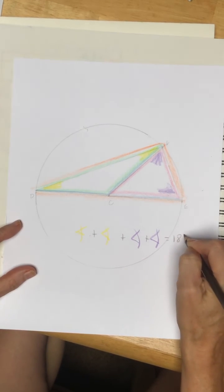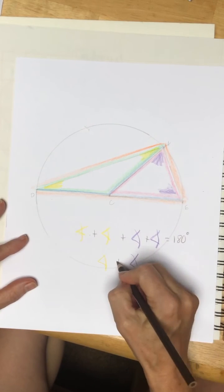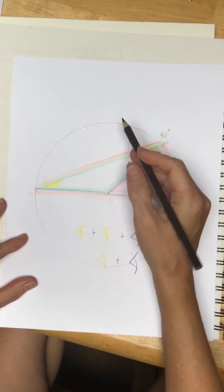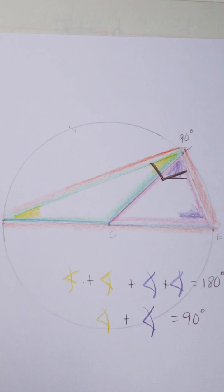That stands to reason that one yellow and one purple would give us 90, and the apex angle is one purple and one yellow, which is 90.